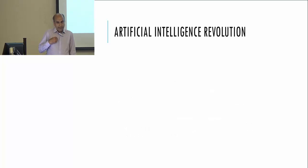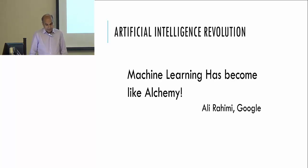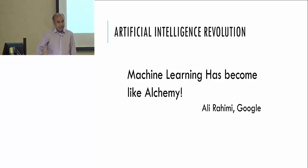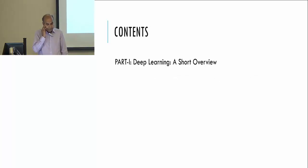At the same time, there are concerns about how fast things are going. A Google researcher said machine learning has become like alchemy — there's not much science, just a lot of intuitive ideas people are trying to solve problems with. In this tutorial, I'm going to cover two things.